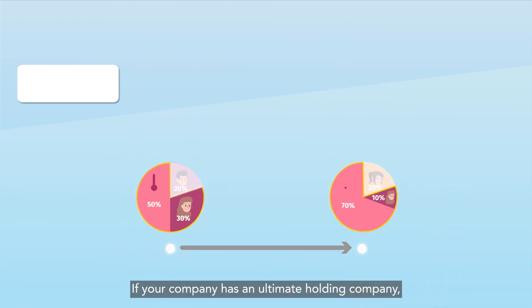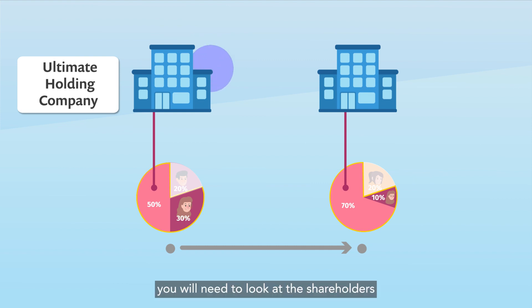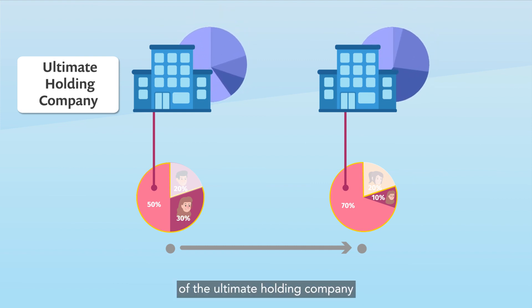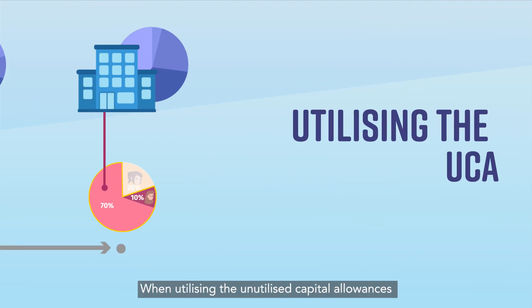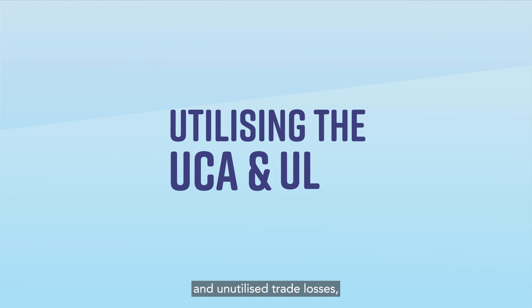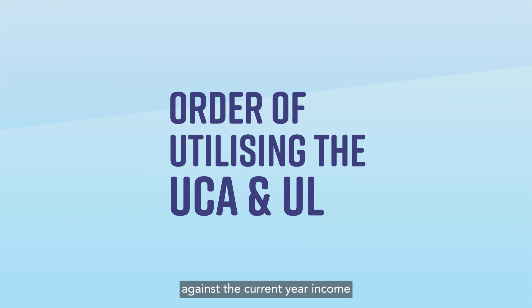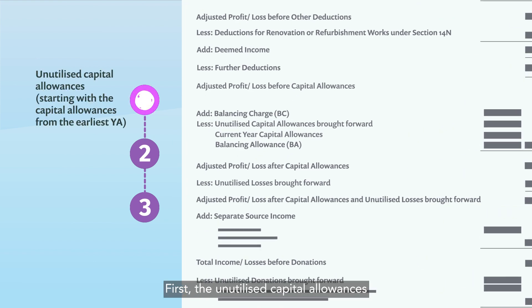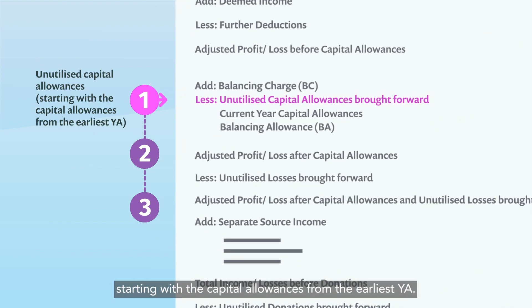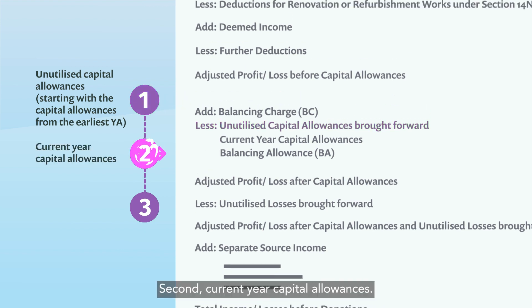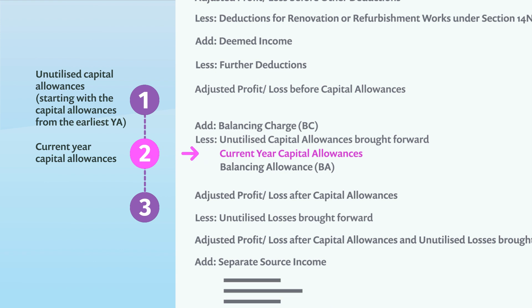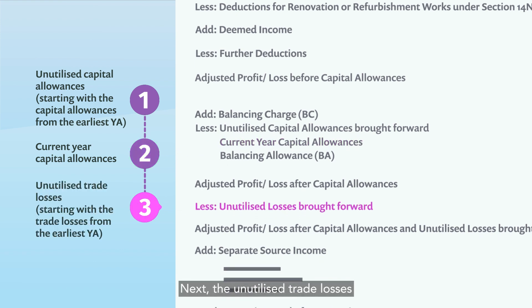If your company has an ultimate holding company, you will need to look at the shareholders of the ultimate holding company as at the relevant dates. When utilising the unutilised capital allowances and unutilised trade losses, the order of claiming the deductions against the current year income must be: first, the unutilised capital allowances starting with the capital allowances from the earliest YA; second, current year capital allowances; and next, the unutilised trade losses starting with the trade losses from the earliest YA.